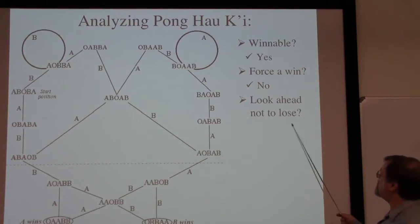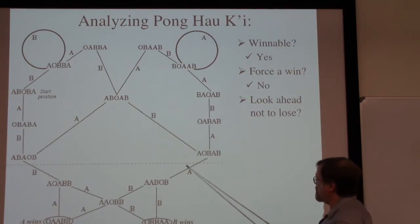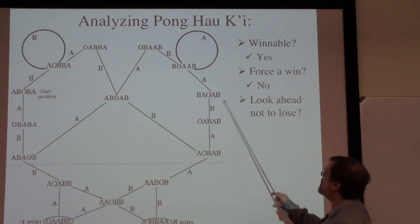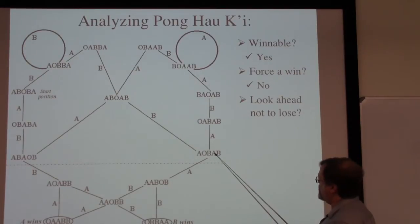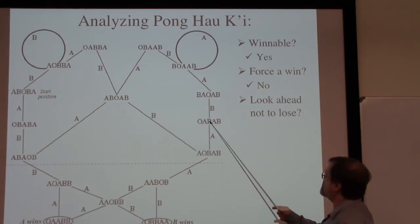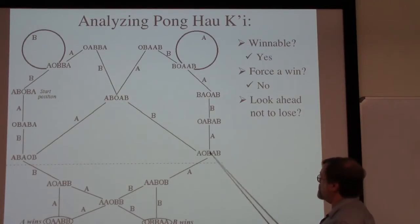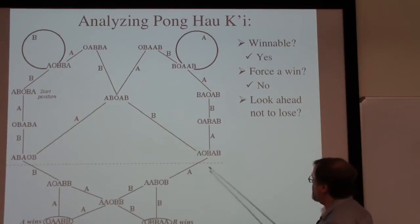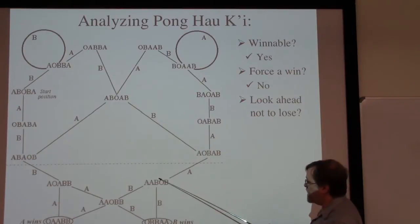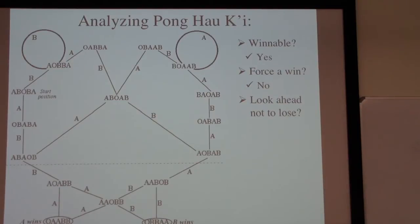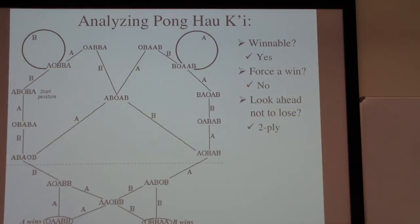How far ahead do we have to see not to lose? A wants to make sure they don't make this move, and instead go up here to places where we won't be losing. So we have to be able to see ahead two ply. From here, if all I could see was one ply ahead, I might just pick those moves randomly, and if I accidentally made this move then B would immediately win. But if I can see two ply ahead, I will realize that if I make that move, B will be able to make this move and win the game. So the answer is two ply look-ahead — if we have two ply look-ahead, then we will not be able to lose the game.